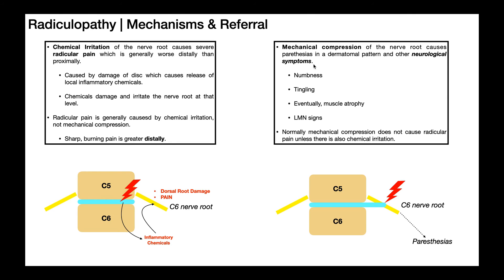How would you only have the dermatomal pattern of paresthesias? That would only be if the dorsal root was compressed. Just because you have a herniation doesn't mean both the dorsal and ventral roots are compressed — only one might be compressed. How would you only have myotomal weakness? If the ventral root was compressed and it spared the dorsal root. And if both were compressed, you'd see both myotomal weakness and dermatomal paresthesias. In all three of those cases, you'd see changes in reflexes, because they involve both sensory and motor components — though reflexes diminishing would be more pronounced when both ventral and dorsal roots are compressed simultaneously.